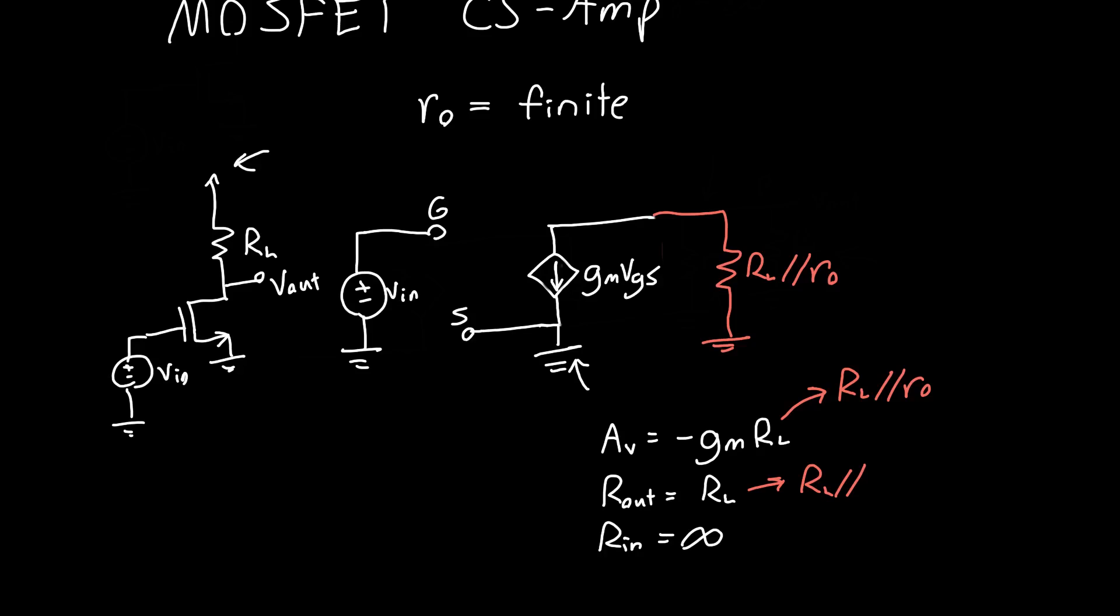So that's one of the great things about this common source amplifier and about adding complexity slowly: often you'll see that your new result with additional complexity - so in this case with RO - is just your old result multiplied by something, or some function of your old result that's pretty easy to analyze.